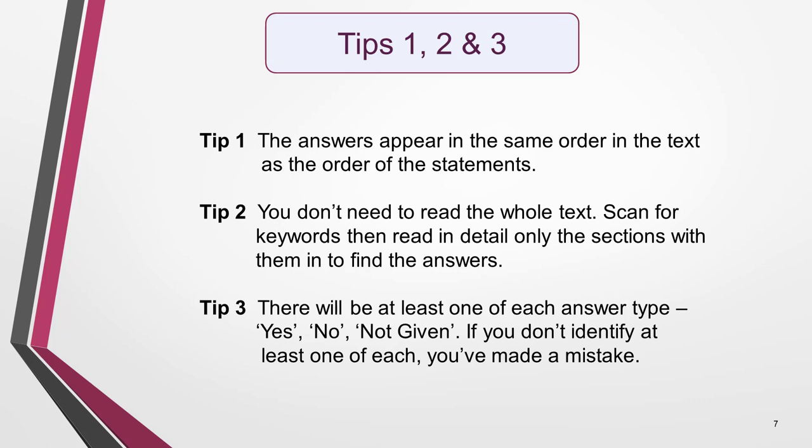Tip three: there will be at least one of each answer type — that is, at least one yes answer, one no answer, and one not given answer. So if you don't have at least one of each when you've completed the question, you've made a mistake.